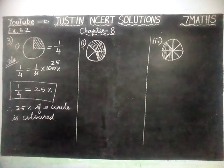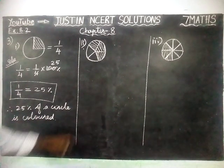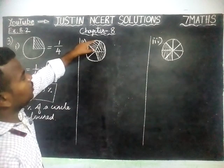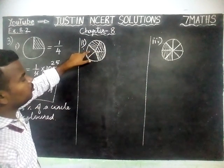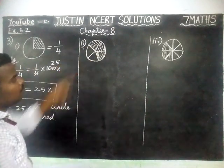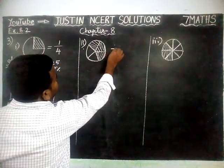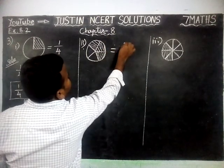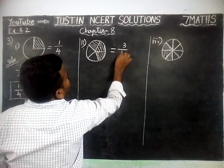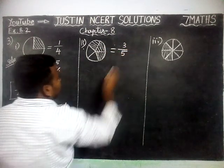Then the second question: here, totally 1, 2, 3, 4, 5 parts are there. Out of 5, parts 1, 2, 3 are colored. So the fraction is 3 by 5.